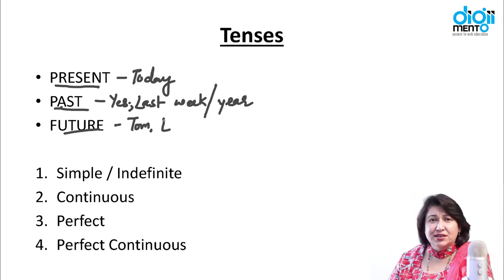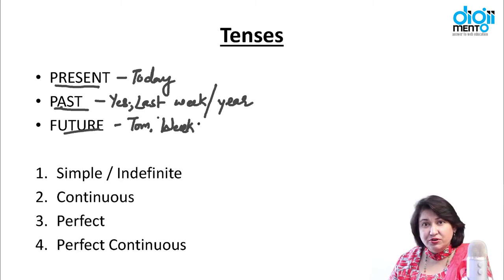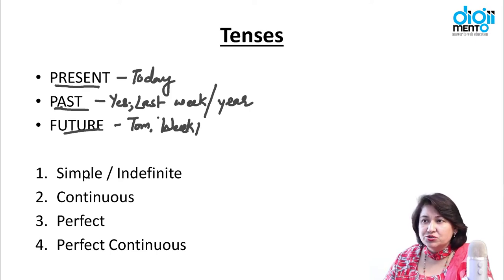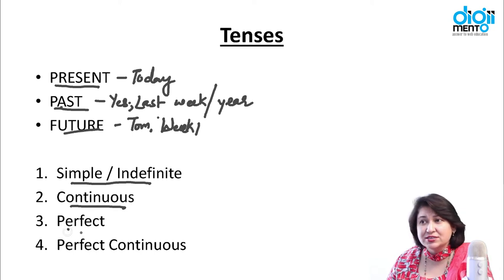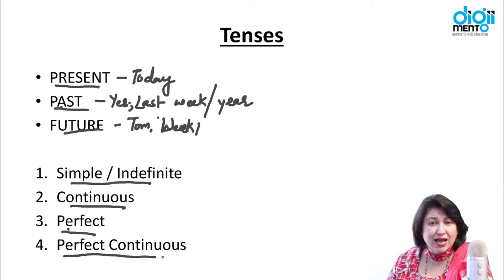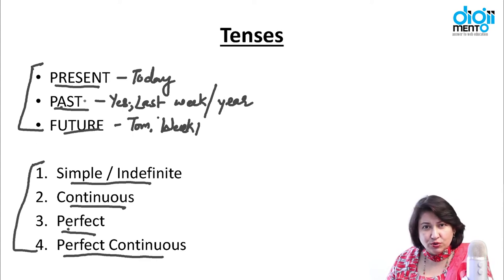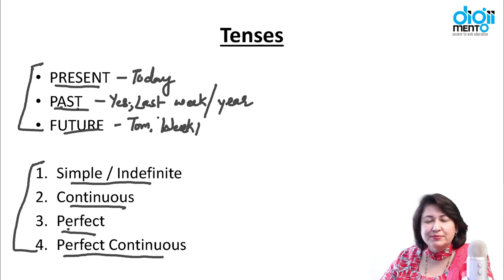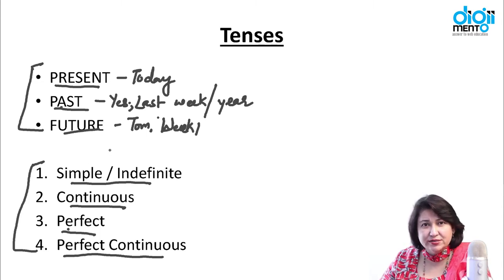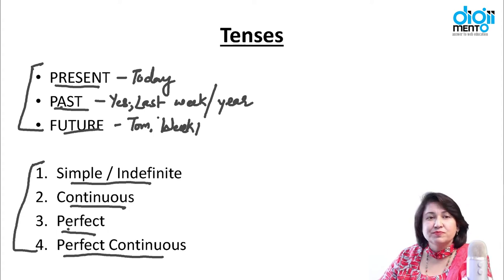These tenses can be subdivided into different types: we have simple or indefinite tense, continuous tense, perfect tense, and perfect continuous tense. Each of the three main tenses — present, past, and future — can be put into all four types. So if someone asks how many tenses there are, it's approximately 12 tenses, because three multiplied by four gives you 12.